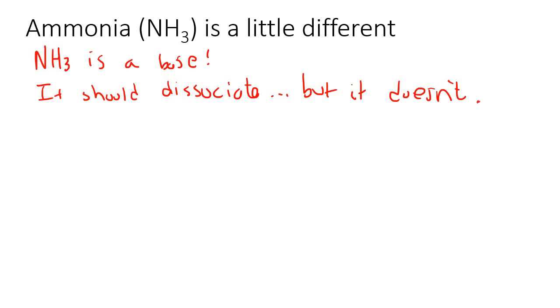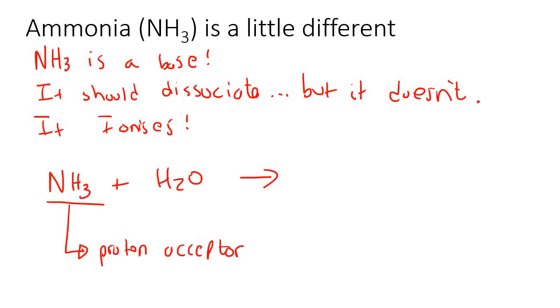Now ammonia. We should know that ammonia is a base. So it should dissociate. But it doesn't. It ionizes. So what does that mean? It reacts with the water. But now please remember that it is still a base, so it's still a proton acceptor. It is still a base. So if it accepts a proton, then it will become NH4 positive, because a proton is positive. And then the H2O will have one less hydrogen. So that will be OH negative.